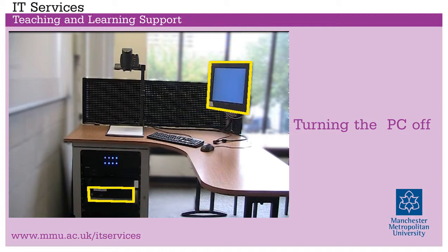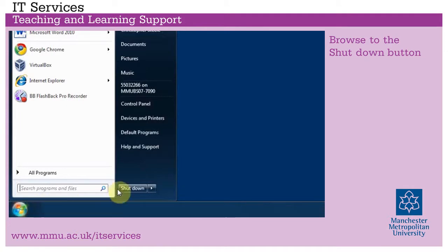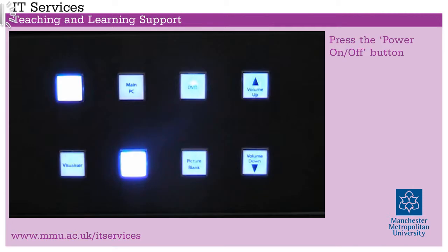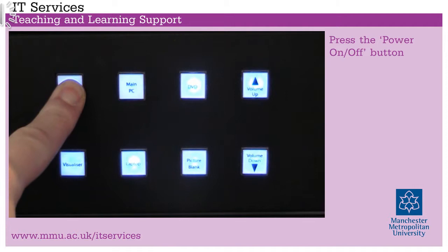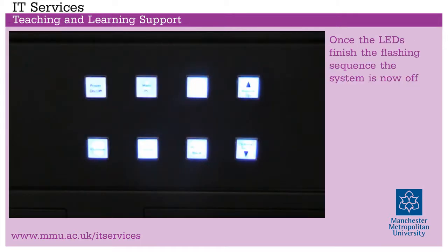Turning the PC off: browse to the shutdown button. Turning the system off: press the power off button. Once the LEDs finish the flashing sequence, the system is now off.